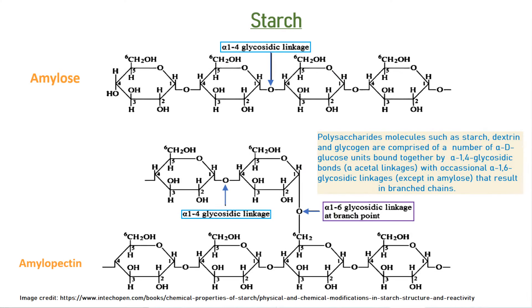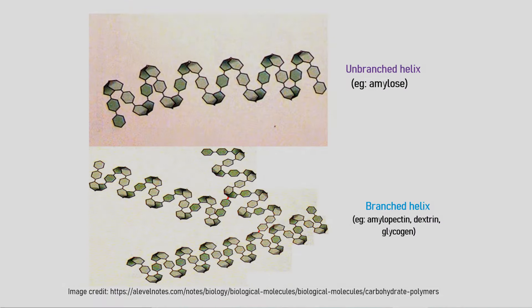Polysaccharide molecules such as starch, dextrin, and glycogen are comprised of a large number of alpha-D glucose units that are bound together by alpha-1,4 glycosidic bonds, or alpha-acetal linkages, with occasional alpha-1,6 glycosidic linkages that result in branched chains, except in amylose. As a result of the bond angles in the alpha-acetal linkages, these molecules form branched or unbranched 3D spiral structures, much like a coiled spring.